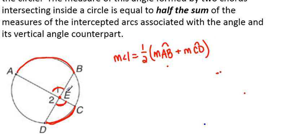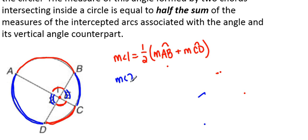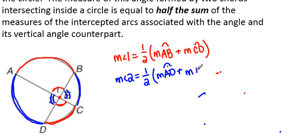The other pair of vertical angles in this picture — this angle over here and angle two — also have a pair of intercepted arcs. The blue arc goes with angle two. So the measure of angle two, whose vertex is inside the circle but not at the center, is going to be half of arc AD plus arc BC. That's the first important rule: any angle whose vertex is inside the circle has a degree measure equal to half the sum of its arc and its vertical angle's arc.